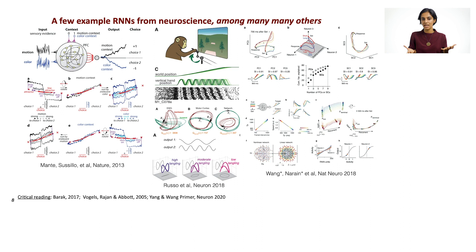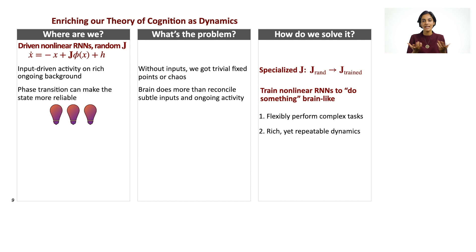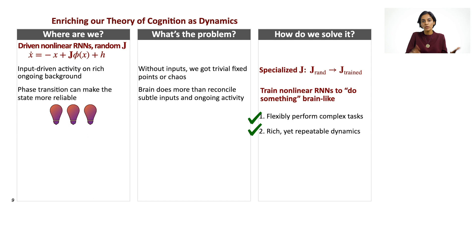Here's another example from Abigail Russo and Mark Churchland along with Larry Abbott, where they trained a neural network model to do something similar to what a non-human primate does in a cyclical behavior. This tackled a fundamental problem in neuroscience: when you're recording activity from a brain region, how do you know if this activity is intrinsically generated or inherited from a connected region? They developed this powerful metric called tangling that could get at some of these mechanistic questions. We're enriching our theory of cognition as dynamics and developing a program in which cognition can be understood by looking at dynamical motifs as well as the geometry of these motifs in state spaces.